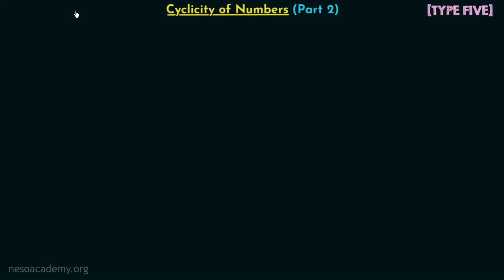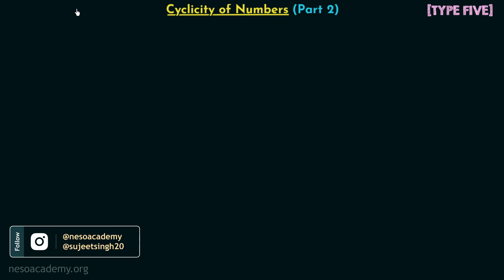In the last lecture we understood what is cyclicity of numbers and we also derived the cyclicities for digits 0, 1, 2, and 3. Now in this presentation we will find out the cyclicities for digits 4, 5, 6, 7, 8, and 9.